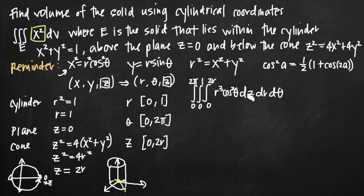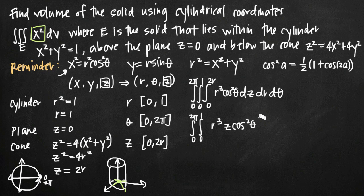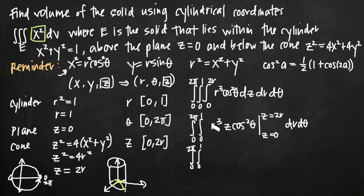Now we evaluate the integral. Starting with the innermost integral, we integrate r cubed cosine squared theta with respect to z, holding r and theta constant. Integrating simply appends a z, giving us r cubed z cosine squared theta. Evaluating from z equals 0 to z equals 2r, plugging in 2r gives 2r times r cubed cosine squared theta, which equals 2r to the fourth cosine squared theta. Plugging in z equals 0 gives 0, so that term disappears.